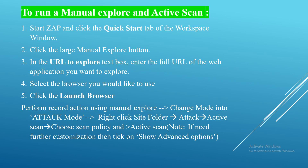Launch the browser and perform the actions. That means going to particular web pages — all are intercepted by the app and we can see them on the site tree. After capturing the complete actions, go to the site tree and right-click. Before that, we need to change the mode into attack mode. Then right-click on the site tree folder, click on attack, choose the active scan, and choose the policy — the default policy. Then perform the active scan. The scanning will be started and it will take time. Then we will generate the report — the alert — and we can download the report and give it to the project manager.